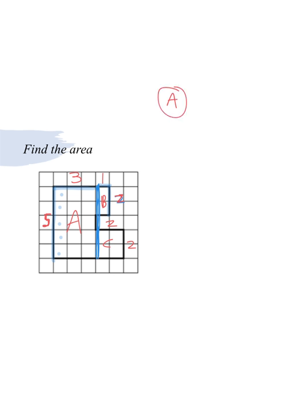So that, to find the area, remember, is length times width. So we're going to do five times three, which tells me the area of rectangle A would be 15.